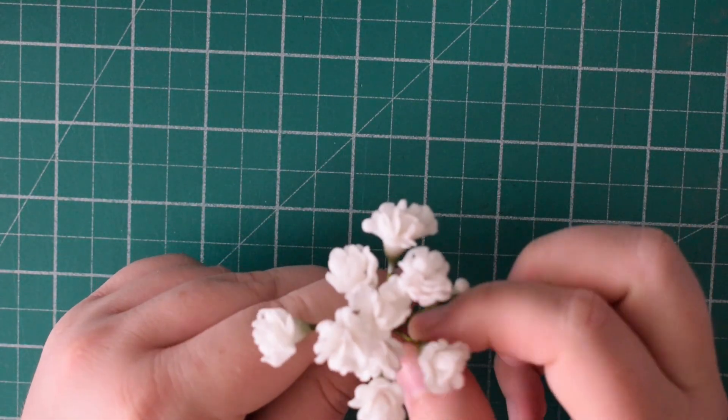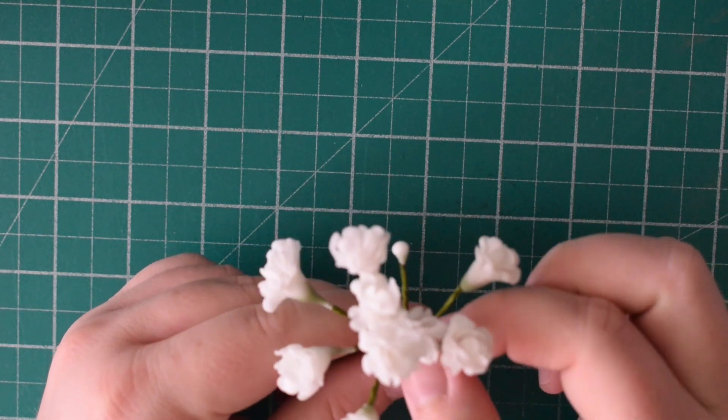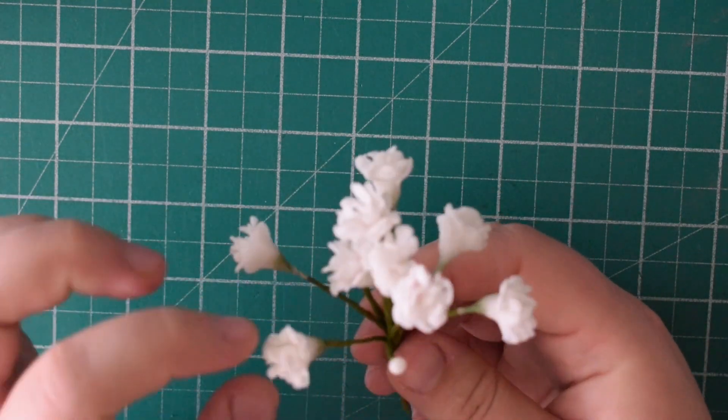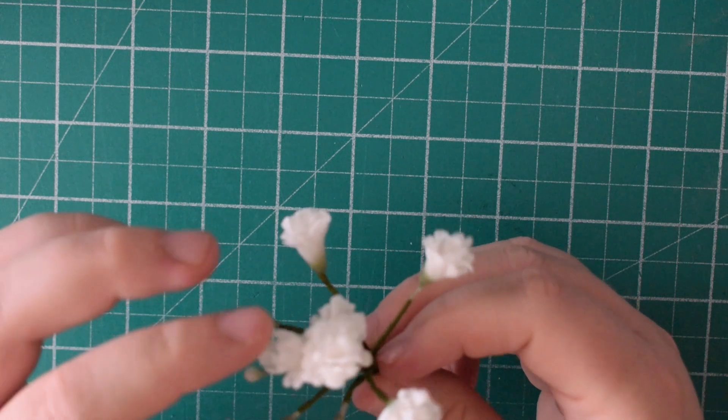So you're going to trim off the excess at the bottom and then pull out the flowers just until you like the look of them. You could re-dust over the bottom; you can see where there's a little bit of white showing on mine.